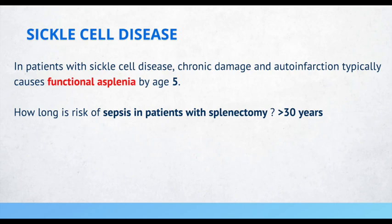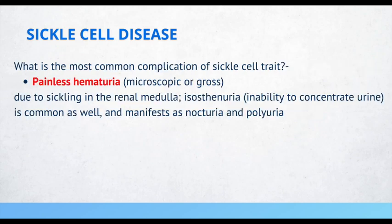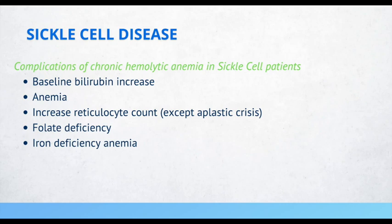Chronic damage and auto-infarction typically causes functional asplenia by age five in sickle cell disease. The risk of sepsis in patients after splenectomy is more than 30 years. The most common complication of sickle cell trait is painless hematuria — macroscopic or gross — due to sickling of red blood cells in the renal medulla. Complications of chronic hemolytic anemia in sickle cell include baseline elevated bilirubin, anemia, increased reticulocyte count, folate deficiency, and iron deficiency anemia.